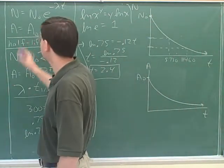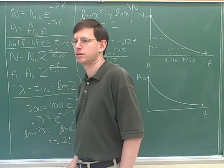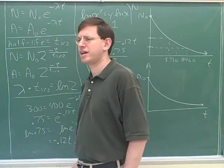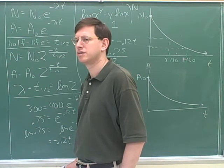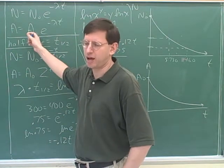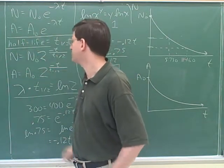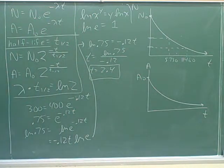What does A sub zero stand for? A is the activity. What are the units for that? Decays per second. That's right, because that tells us how rapid the decay is. What's the difference between A sub zero and A? A sub zero is at the beginning, and A is after time t.